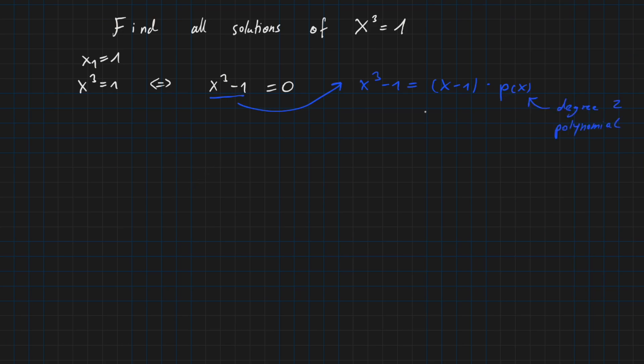So how can we find out what p of x is? We can apply polynomial division. So we can try to calculate p of x as follows: we have x cubed minus 1 divided by x minus 1 as a polynomial, and the result will be our p of x.